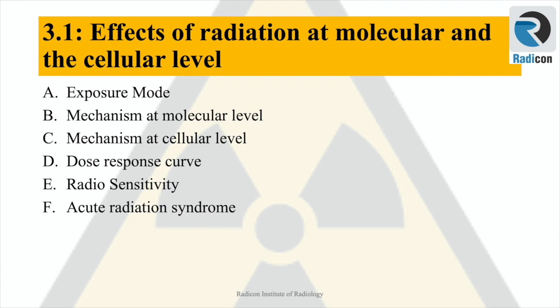The first and longest part of this chapter is the mechanism of radiation effects on the living body. We will discuss various modes of exposure, molecular and cellular mechanisms, with further discussion on the dose-response curve, radio sensitivity, and acute radiation syndrome.